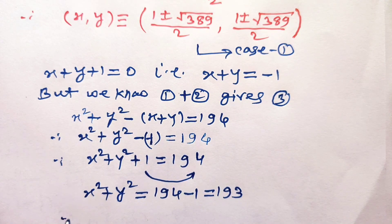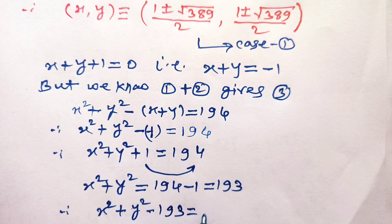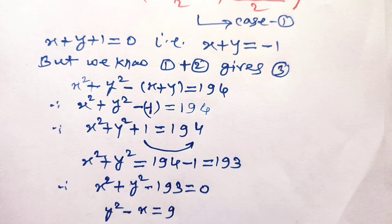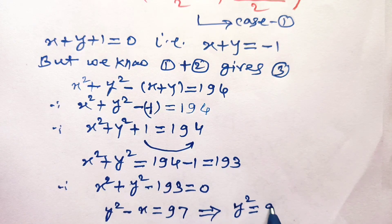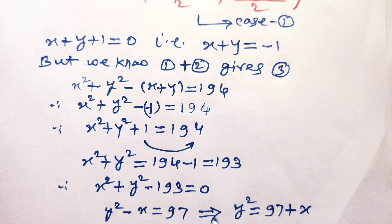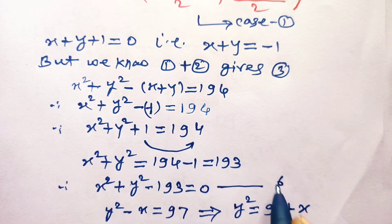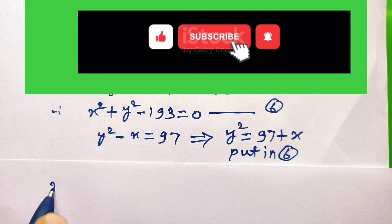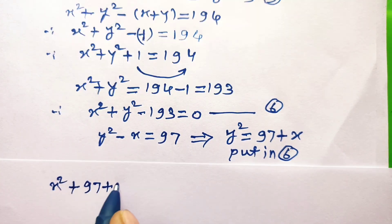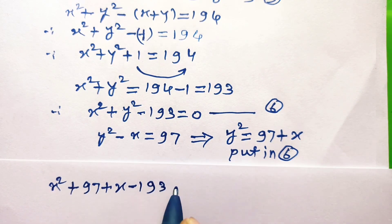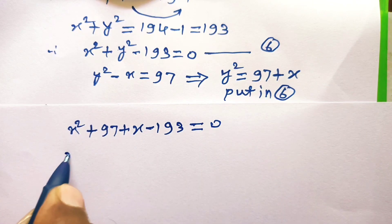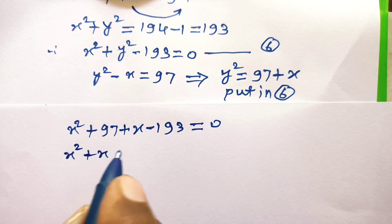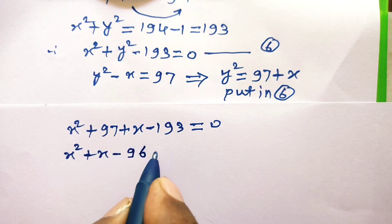Taking 193 to the left-hand side, x squared plus y squared minus 193 = 0. This is equation number 6. From equation 2, y squared minus x = 97, which implies y squared = 97 plus x. Substituting this into equation number 6 gives x squared plus 97 plus x minus 193 = 0. Simplifying, x squared plus x plus 97 minus 193 = 0, so x squared plus x minus 96 = 0.